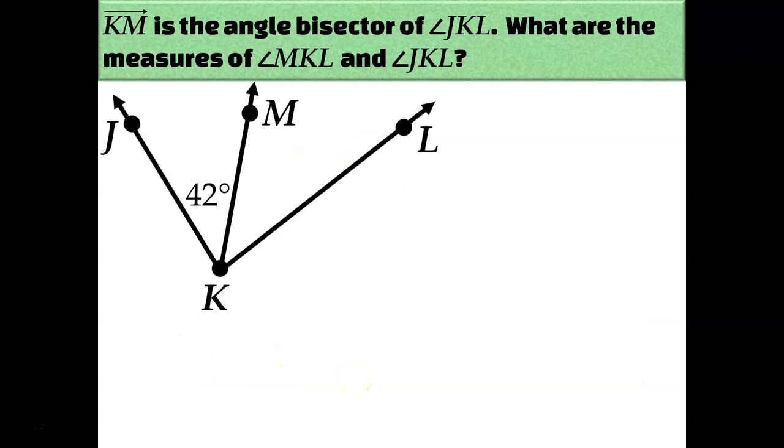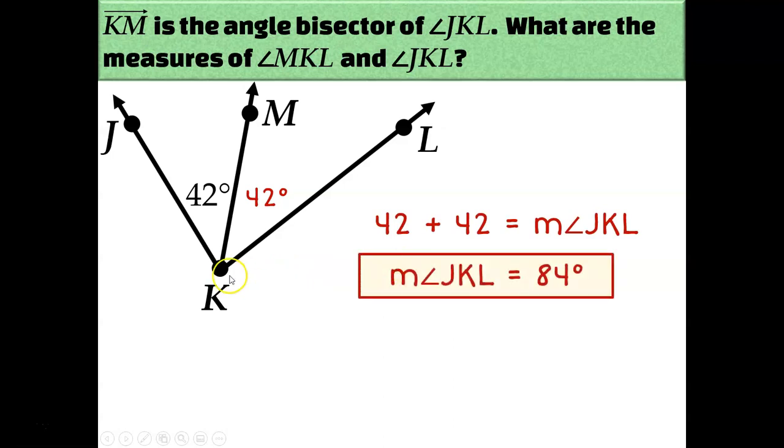Let's try another one. KM is the angle bisector of angle JKL. So what are the measures of angle MKL and JKL? This time I'm told the measure of one of the angles created by the angle bisector instead of the measure of the angle that was bisected. That allows me to conclude that angle MKL, the other angle created by the angle bisector, must also be 42 degrees. If KM cut JKL in half, then these two angles have to be the same. Well, to figure out the measure of the entire angle, I would need to add those two 42 degree angle measures together. So the measure of angle JKL must be 84 degrees.